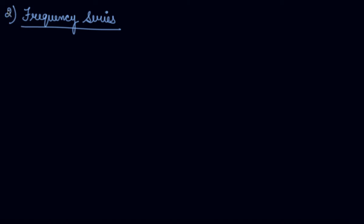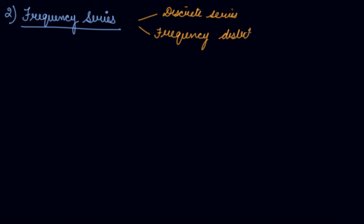In this video we will be studying the second type of series, that is the frequency series. Frequency series are of two types: the discrete series, also called frequency array, and the frequency distribution, which is the continuous series.